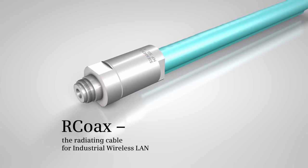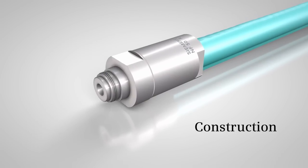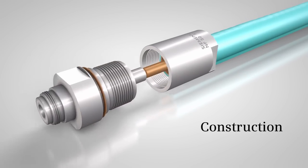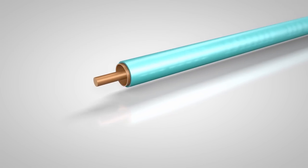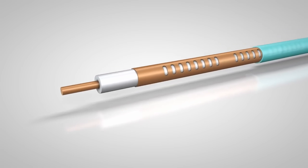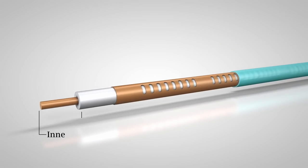The R-CoAX radiating cable is part of Siemens industrial wireless LAN portfolio. With its special construction, it enables reliable radio links even in complex environments.